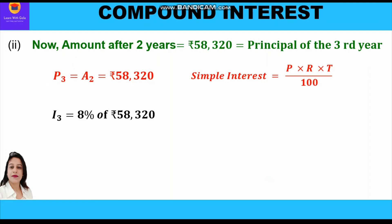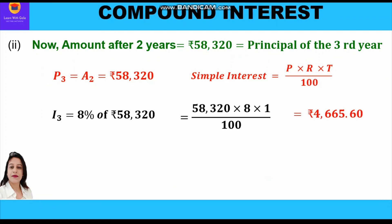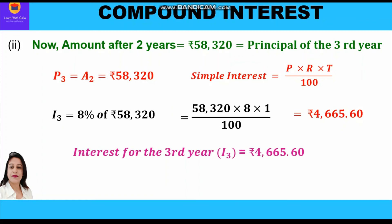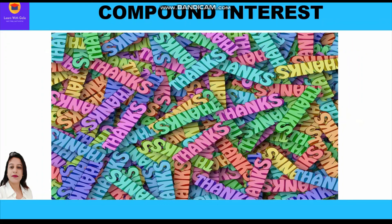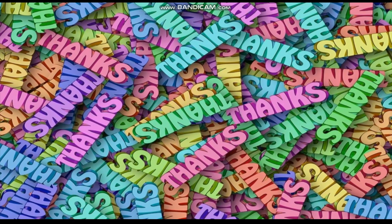We calculate 8% of rupees 58,320 for one year using the simple interest formula: SI = (58,320 × 8 × 1) / 100 = rupees 4,665.60. So the interest for the third year is rupees 4,665.60. We have solved both parts: the amount at the end of the second year is rupees 58,320, and the interest for the third year is rupees 4,665.60. Please like and subscribe to the channel.